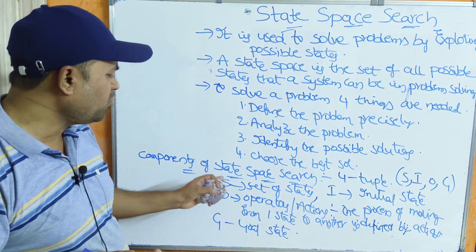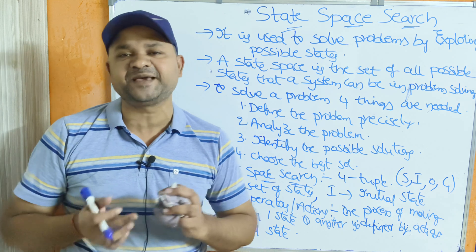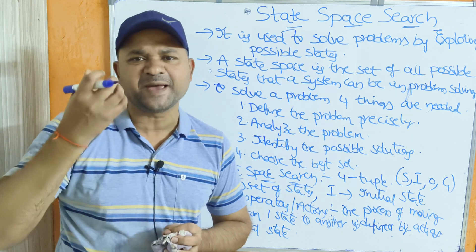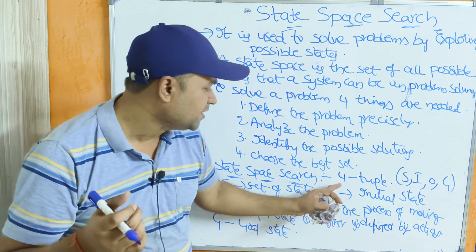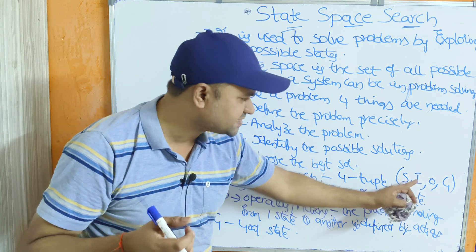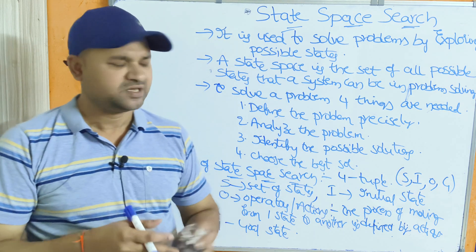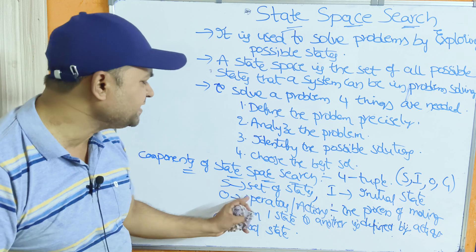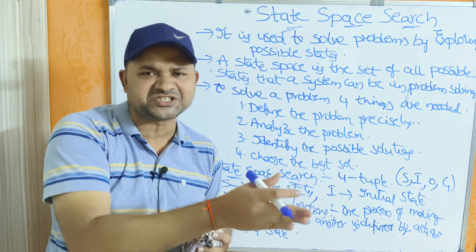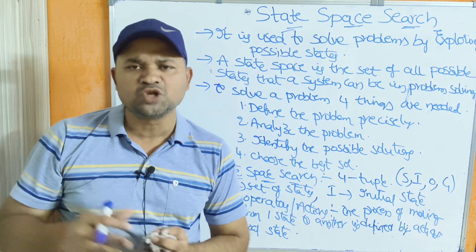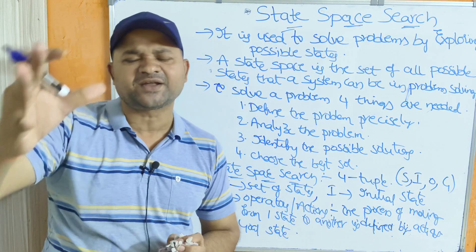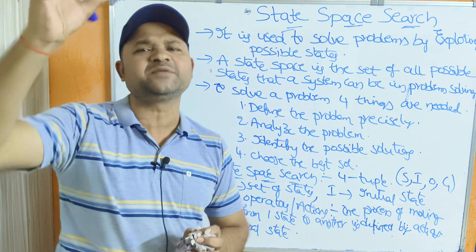Now let's see the components of state space search. A state space search is mainly defined with the help of a four-tuple: S, I, O, J. S means the set of states — we will have an initial state, a goal state, and from initial to goal state we come across various intermediate states.